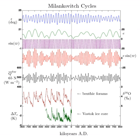The mid-Pleistocene transition can now be reproduced in numerical simulations that include a decreasing trend in carbon dioxide and glacially induced removal of regolith, as explained in more detail in the article on the mid-Pleistocene transition.